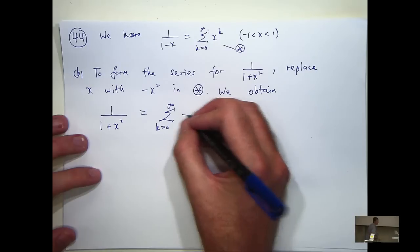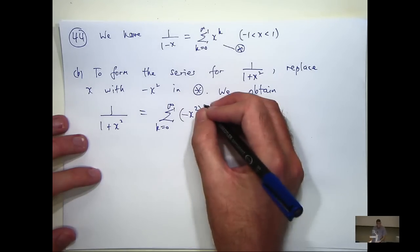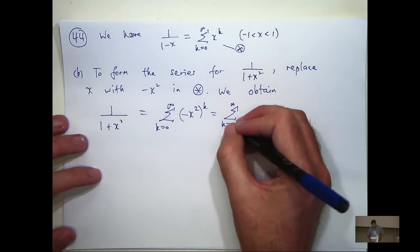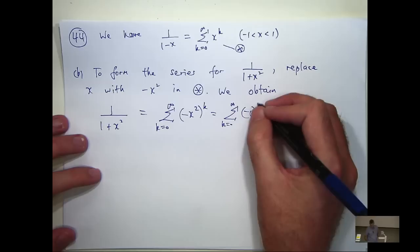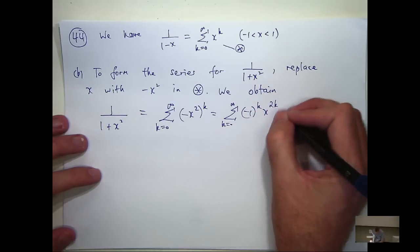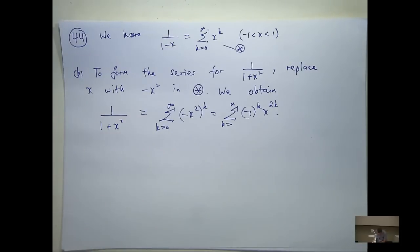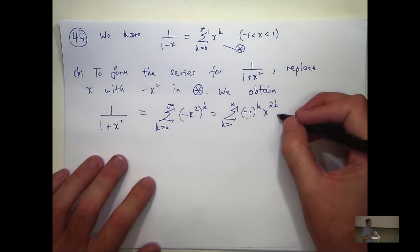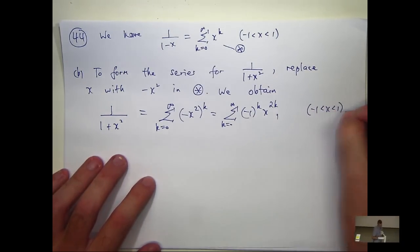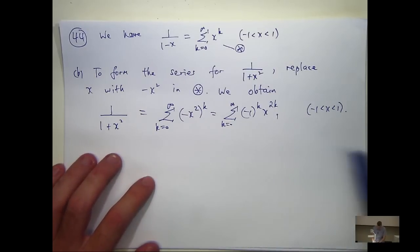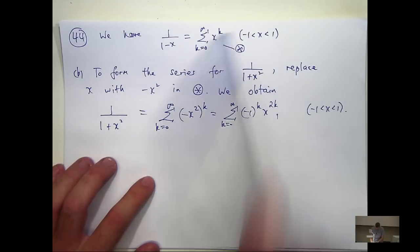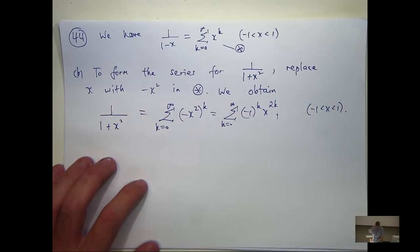The right-hand side is going to become minus x squared all to the k. And if I want to, I can expand that bracket and make it a bit prettier. Now again, that's only valid for x between minus one and one, right? Because that's what the original series that we did our work on was restricted to.